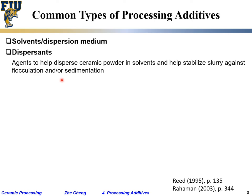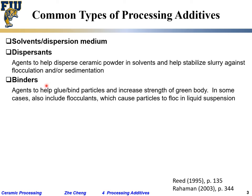Binders are agents that glue or bind the ceramic powder together to give it a certain strength in the so-called green body before firing. They provide strength to the pre-firing ceramic body to facilitate handling and give it a certain shape.